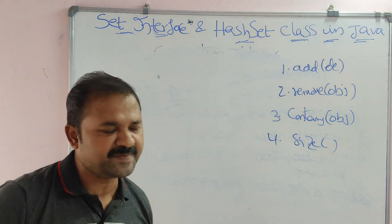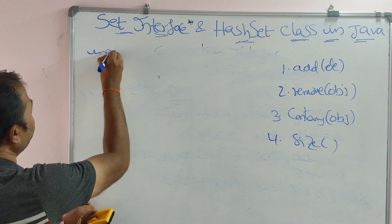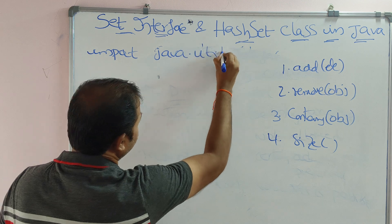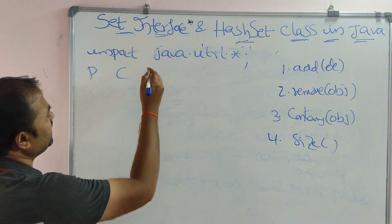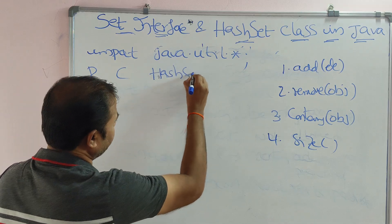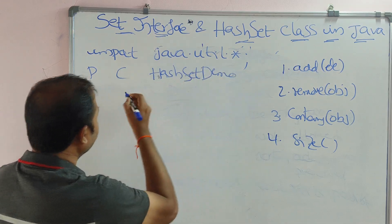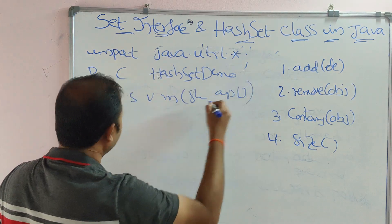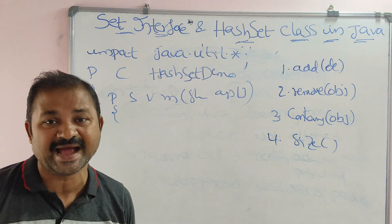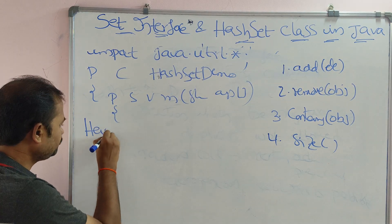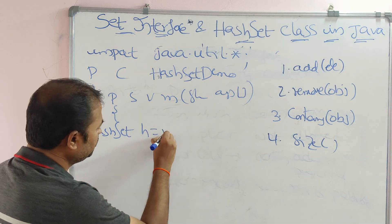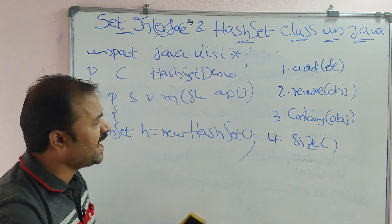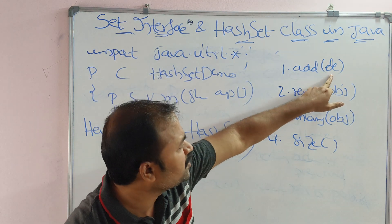First we have to import the utility package because the Set interface is available there: 'import java.util.*'. Next, public class HashSetDemo. Then the main method: 'public static void main(String[] args)'. Now let's create an object for HashSet: 'HashSet h = new HashSet();'.